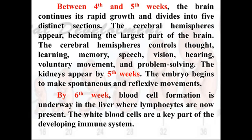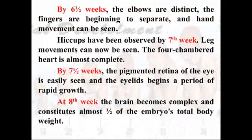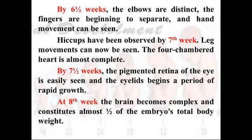By the sixth week, blood cell formation is underway in the liver, where lymphocytes — the white blood cells — are now present. They are a key part of the immune system. By six and a half weeks, the elbows are distinct, the fingers begin to separate, and hand movements can be seen.